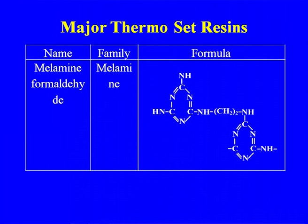Phenol-formaldehyde was known by the name Bakelite and its major application was in electrical applications — especially switches — and that is how the name Bakelite was given. Melamine-formaldehyde is one of the very important polymers, and during the 1970s and 1980s it brought about a lot of revolution in kitchenware.